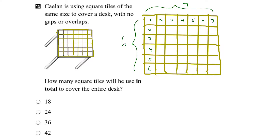That means the total number of tiles will equal 7 times 6, or 6 times 7 — whichever way you want to do it.